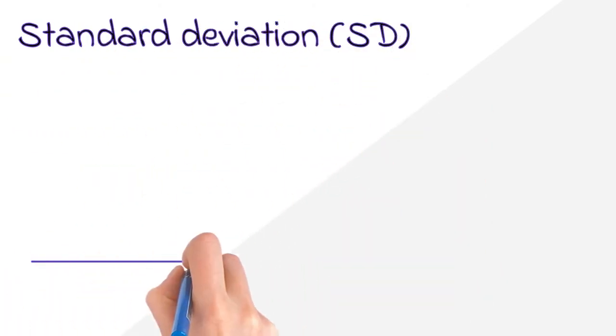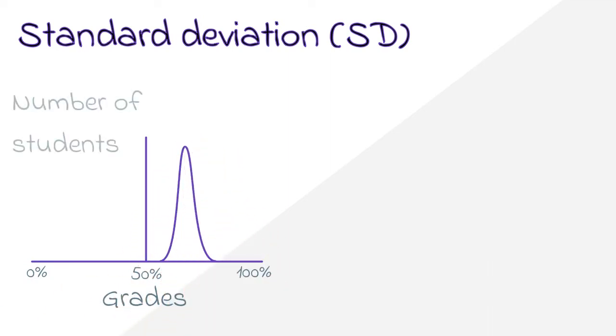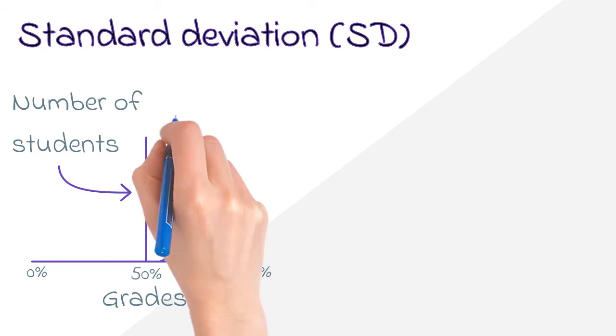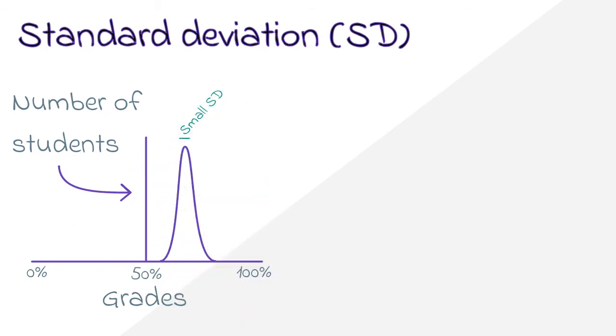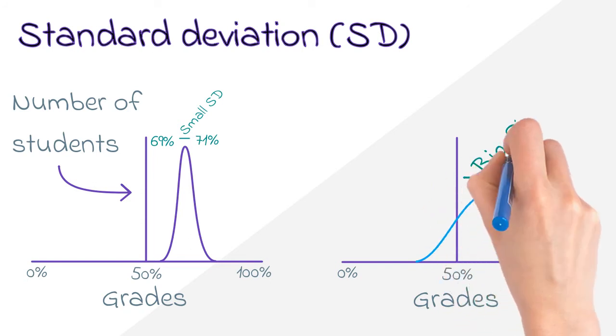Essentially, a standard deviation is just a measure of how broad the spread of grades for a given test might be. For example, if practically everyone in the class got a 70% on the exam, then the standard deviation would be quite small, so the difference in actual grades would be small as well. Meanwhile, in another class, you might have lots of students getting everything from 50s to 90s, meaning there would be a big standard deviation, and therefore the difference in grades would be quite large.